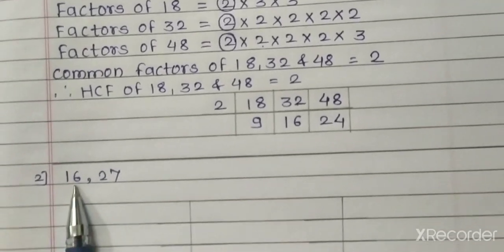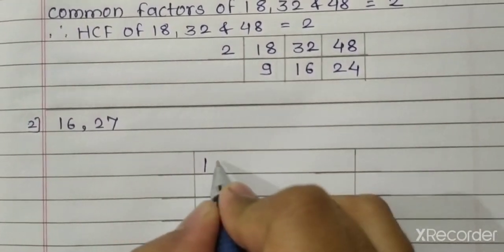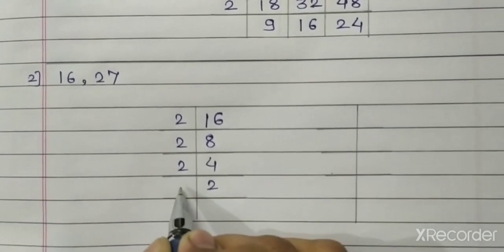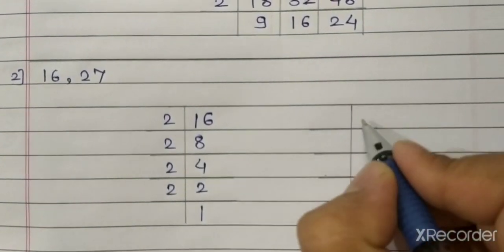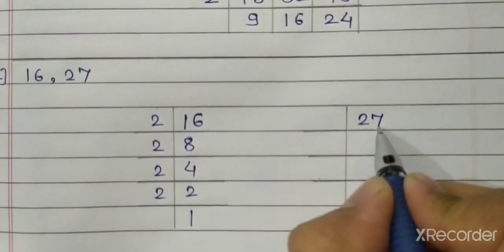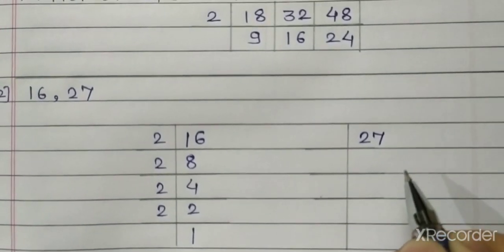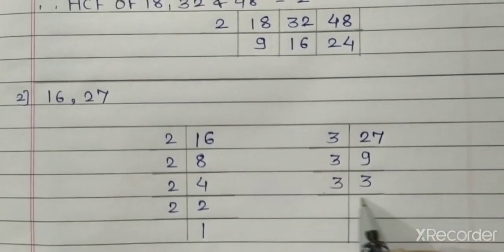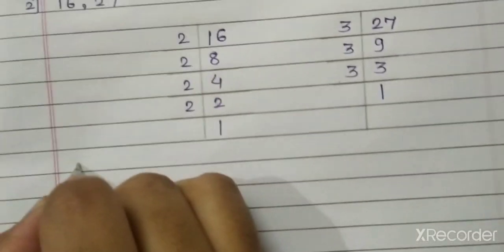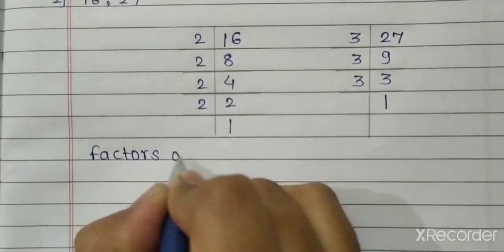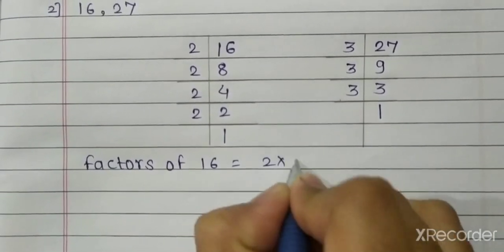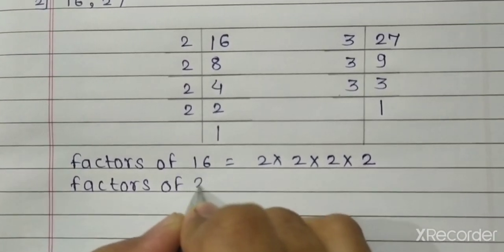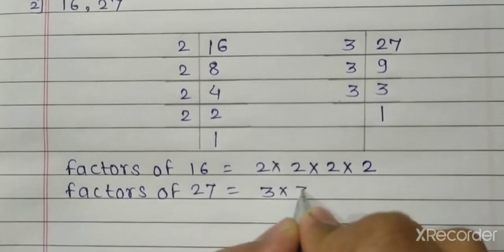See the second example: find the HCF of 16 and 27. Write the factors of 16: 2 eights are 16, 2 fours are 8, 2 twos are 4, 2 ones are 2. Now write the factors of 27. Twenty-seven cannot be divisible by 2, so take the next prime number, 3. Three nines are 27, three threes are 9, three ones are 3. Factors of 16 are 2 × 2 × 2 × 2, and factors of 27 are 3 × 3 × 3.